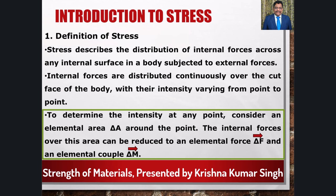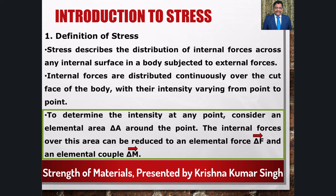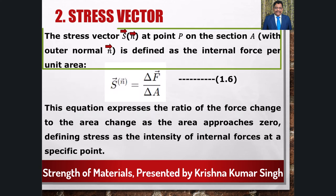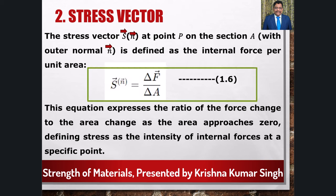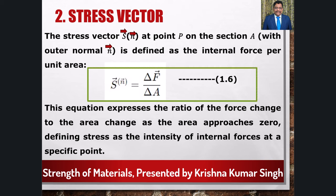Elemental area delta A पर internal forces को एक resultant elemental force delta F और एक elemental couple delta M में reduce किया जा सकता है जो point P पर लगते हैं। सामान्य रूप से delta F और delta M surface के normal end से inclined होते हैं। हम stress vector S(N) को point P पर section A, जिसका outer normal N होता है, पर define करते हैं जो internal forces की intensity per unit area है। Stress vector N के respect में define किया गया है जब area 0 के पास पहुंचता है तब force के change और area के change के ratio का limit लिया जाता है।